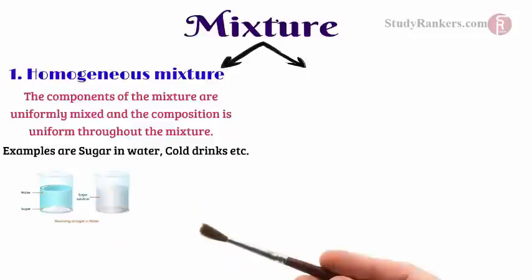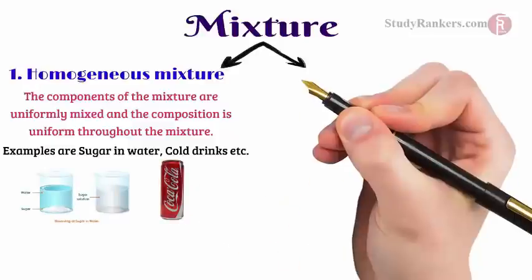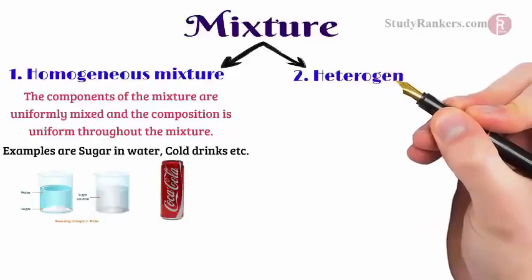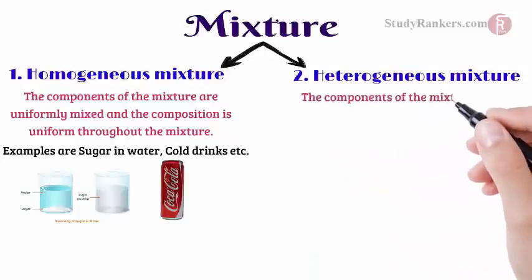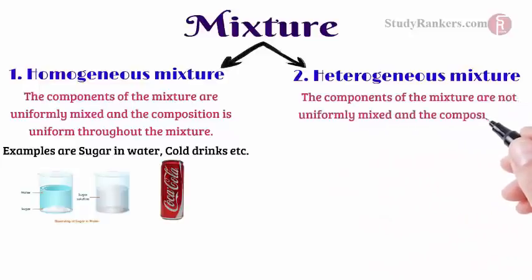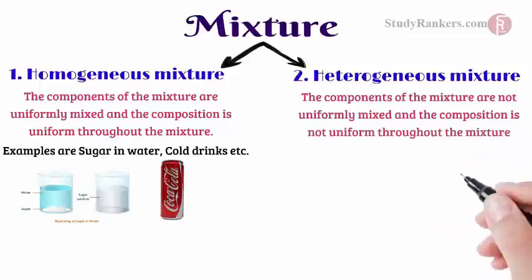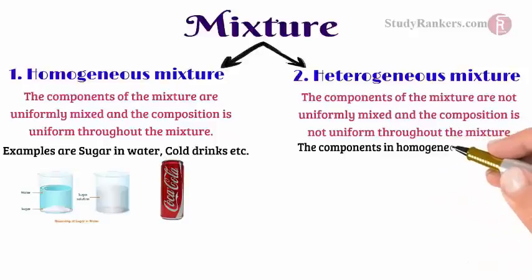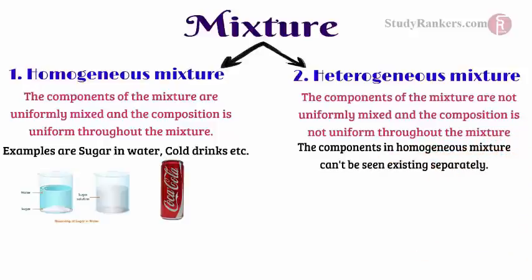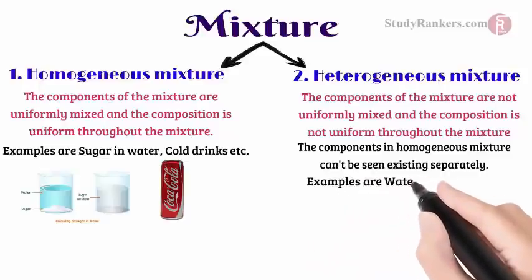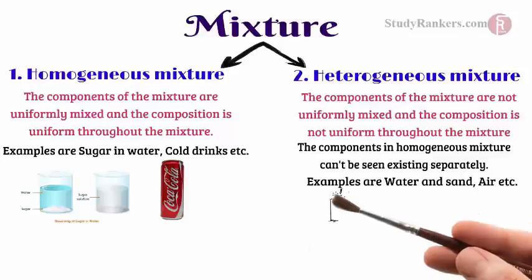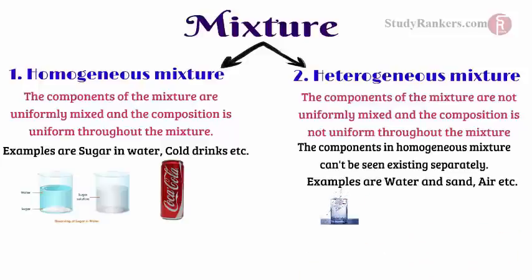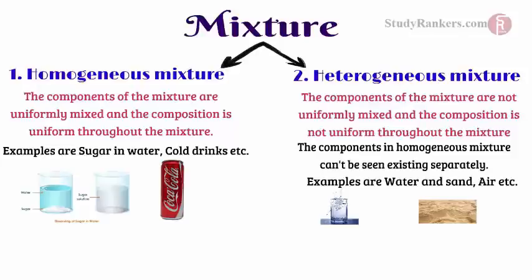Now we are going to define heterogeneous mixture. A mixture is said to be heterogeneous if all the components of the mixture are not uniformly mixed and the composition is not uniform throughout the mixture. Examples are water and sand, air, etc. The components in a homogeneous mixture can't be seen existing separately — they appear equally divided in all layers with no variation. This will not be the case in a heterogeneous mixture, where the mixed substances can be observed and are not uniform throughout.